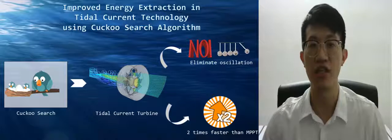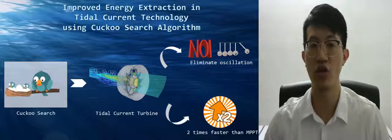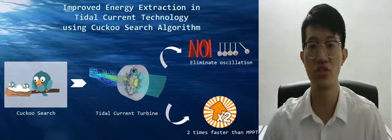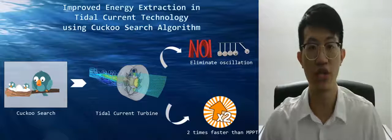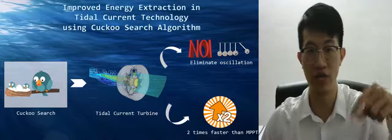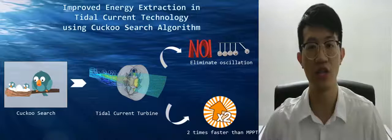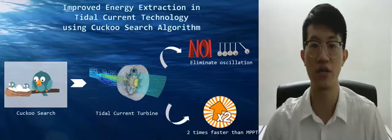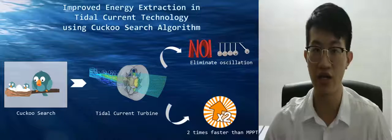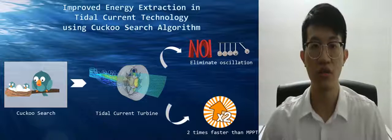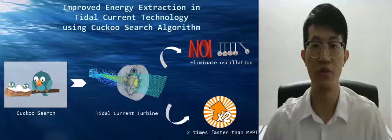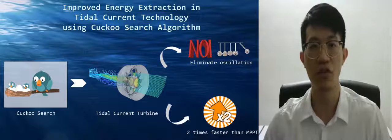The tidal current turbine is incorporated with a permanent magnet synchronous motor. It takes pitch angle and tidal current speed as inputs. The Cuckoo Search Algorithm tunes the pitch angle of the tidal current turbine — either up or down — to optimize energy efficiency. The power generation formula is closely related to pitch angle, and tuning is based on system feedback such as power difference and tidal current speed. By using the CS algorithm, the system eliminates oscillation at steady state, and the optimization speed is two times faster compared to maximum power point tracking.